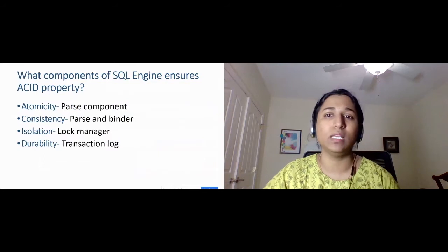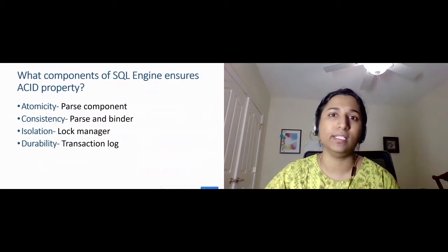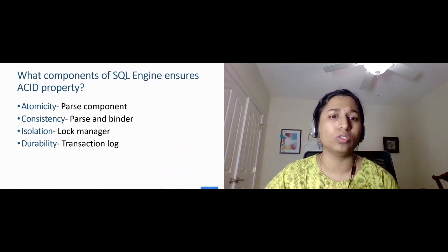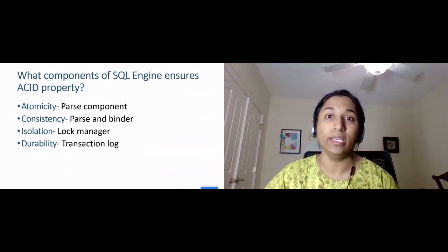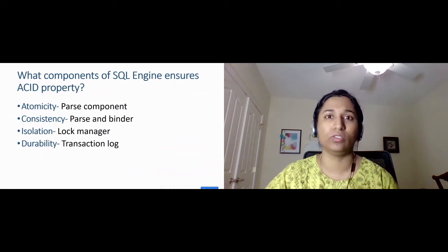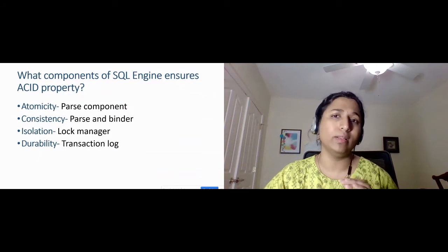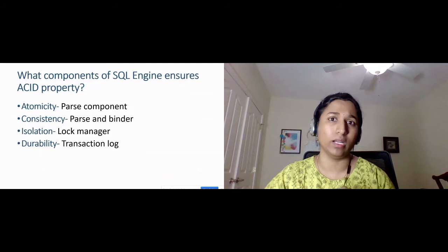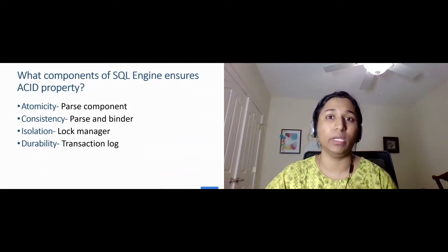So what components of the SQL engine ensure the ACID properties? Atomicity is taken care of by the parser component inside the relational engine. Consistency is taken care of by the parser as well as the binder components. Isolation is about the locking mechanism — it's taken care of by the lock manager inside the storage engine. Durability is the toughest of all — it's taken care of by the transaction log inside the storage engine. Once atomicity, isolation, and durability are ensured, consistency will automatically be ensured.